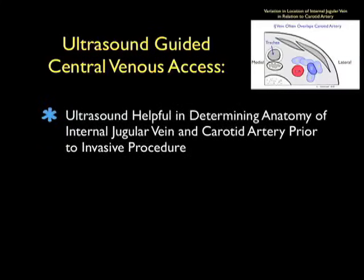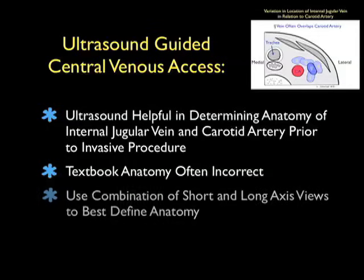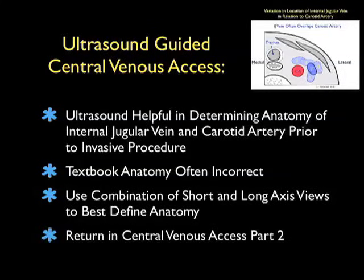In conclusion, thanks for tuning in for part one of ultrasound guided central venous access. I hope I've been able to make the point that ultrasound is very helpful in determining the relative anatomy of the internal jugular vein and carotid artery prior to an invasive procedure, as the textbook anatomy of the vein to artery is often incorrect. It's best to use a combination of short and long axis views prior to a puncture attempt to best define the anatomy. I hope to see you back in Central Venous Access Part 2.